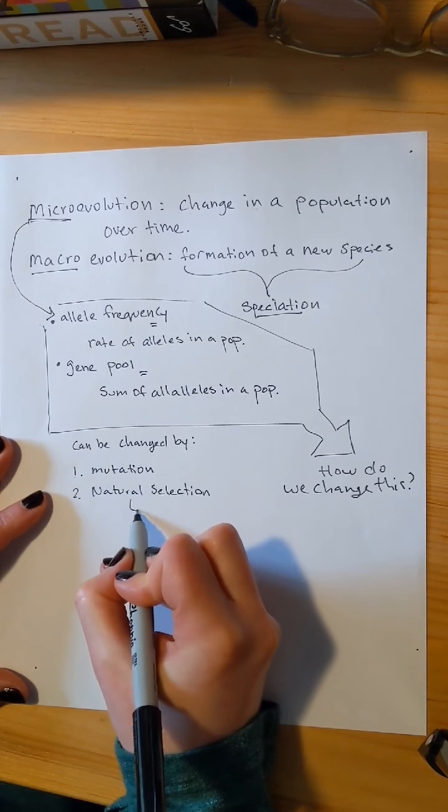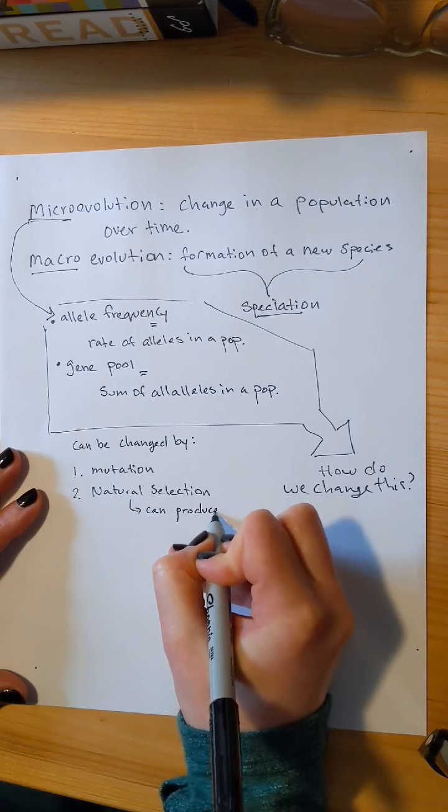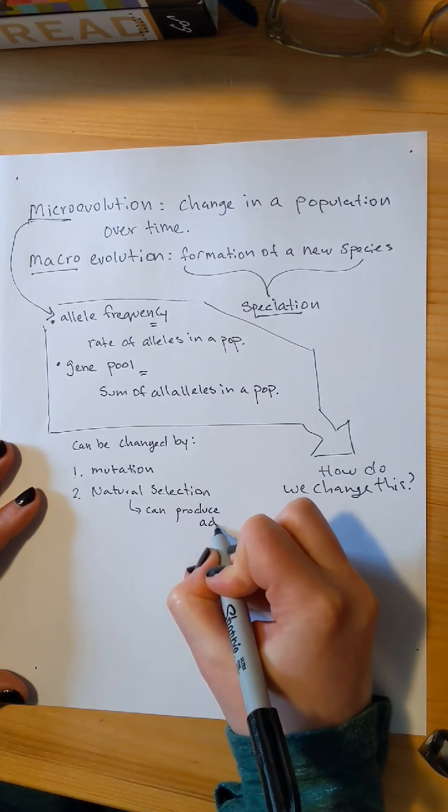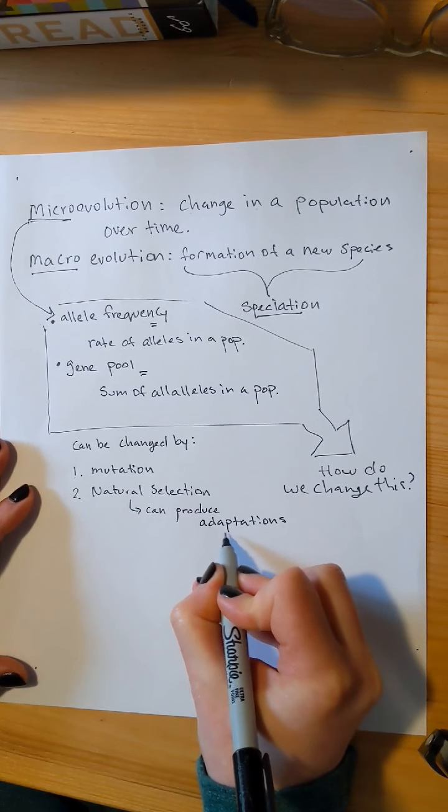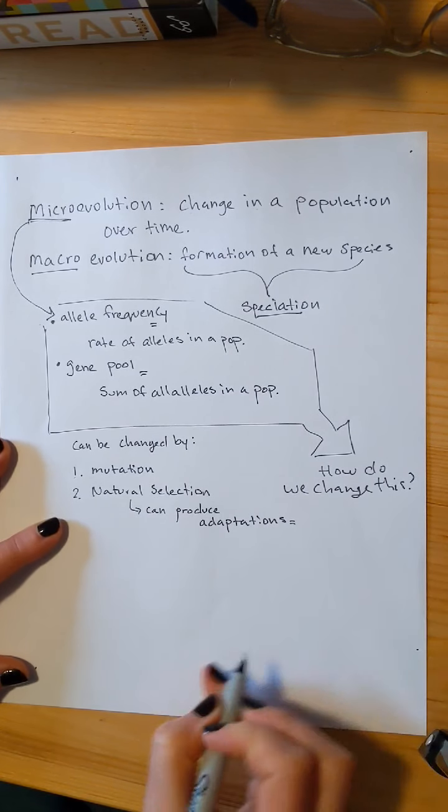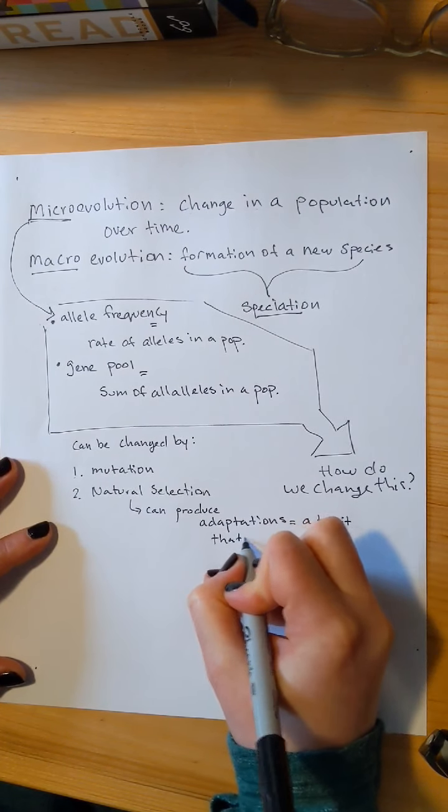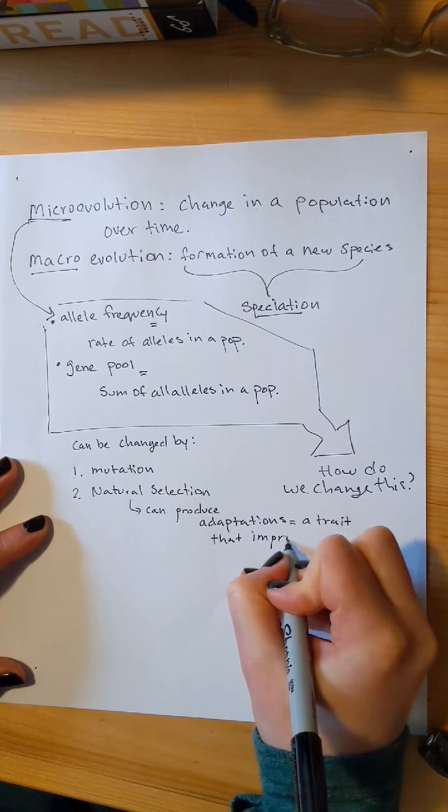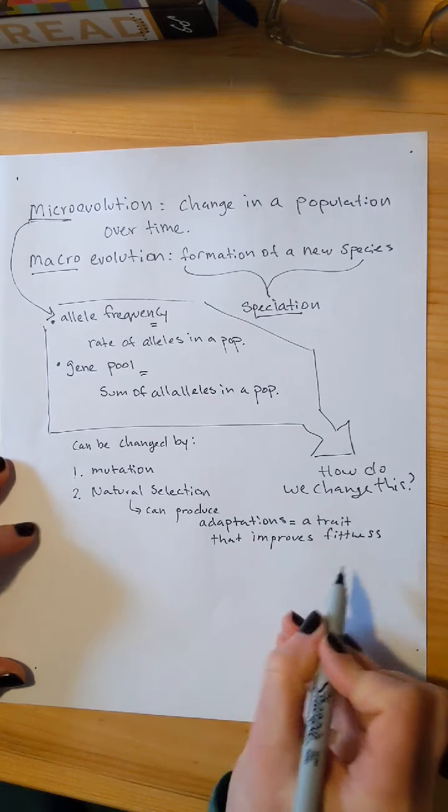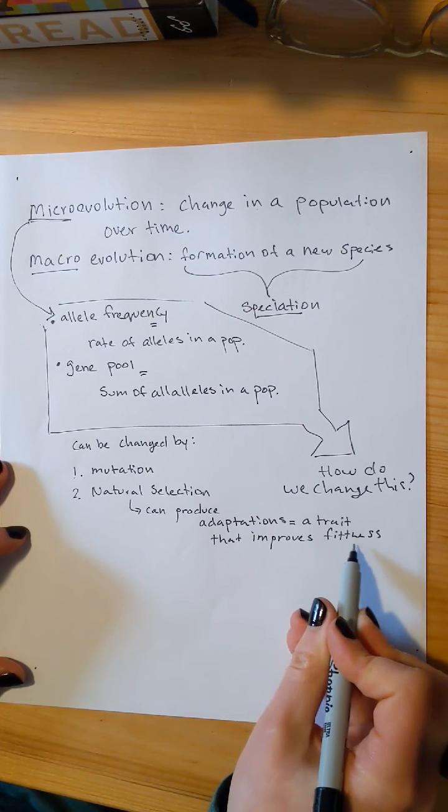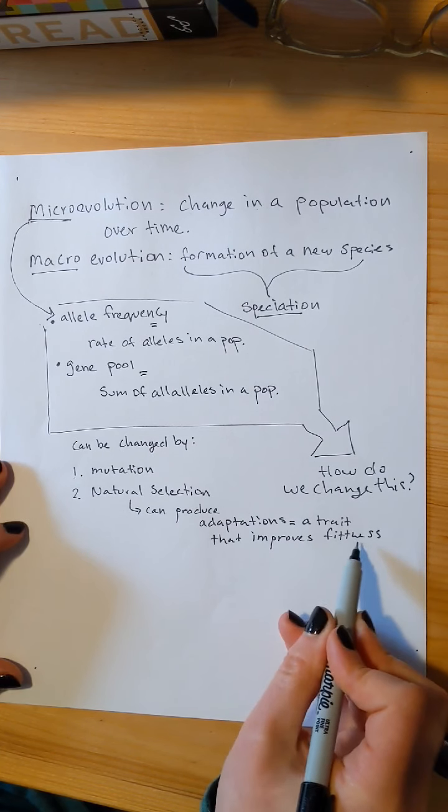Fun fact. Natural selection can produce adaptations. An adaptation is a trait that improves fitness. Fitness being your ability to reproduce and have viable offspring. How much you're contributing to the next generation.